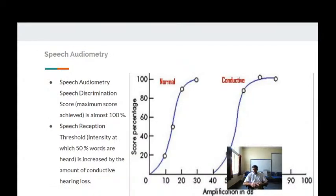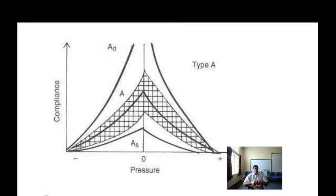In speech audiometry, the results are normal but the speech reception threshold intensity is increased by the amount of conductive hearing loss. Impedance audiometry measures pressure changes in the middle ear cavity. In normal hearing, an 'A' type curve is seen, whereas in otosclerosis an 'As' type curve is seen, wherein compliance is reduced — indicating increased resistance offered by the stiffened ossicular chain. This is detected by the tympanometer.